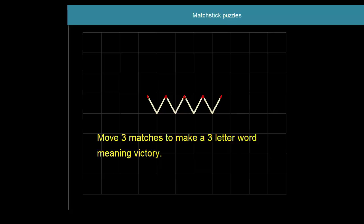Here we have eight matches. Looks like four letter V's doesn't it? We need to move three of them to make a three letter word that means the same as victory, as in beating someone.